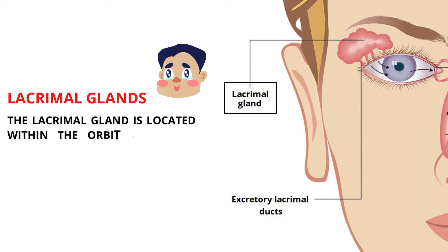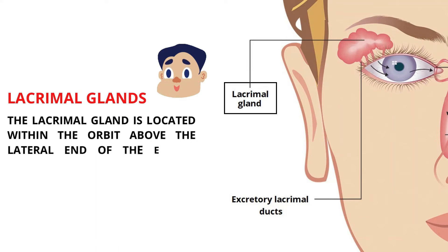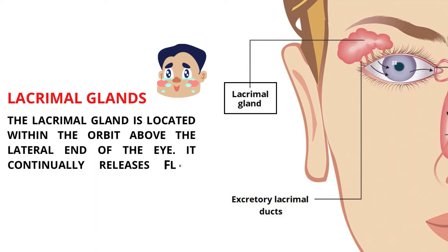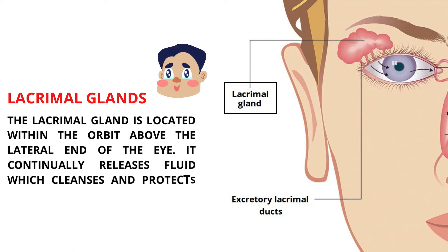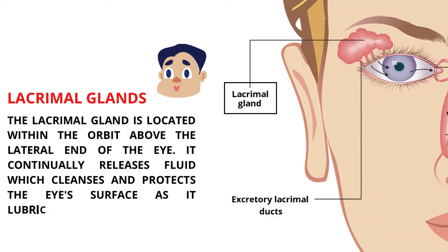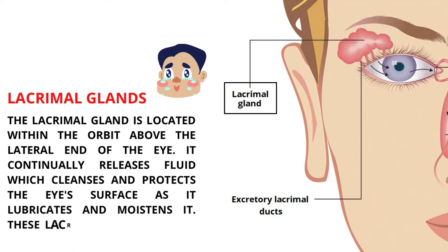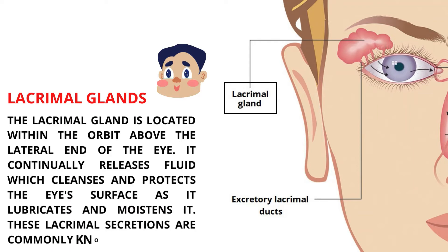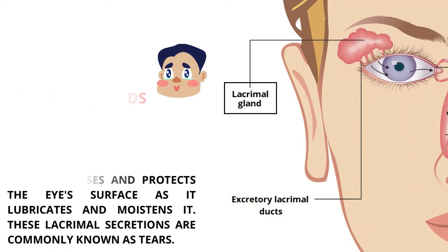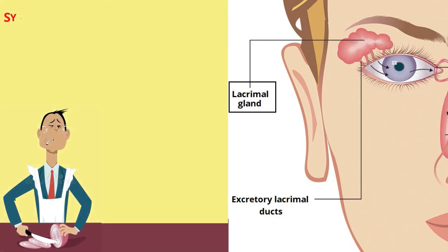The lacrimal gland is located within the orbit above the lateral end of the eye. It continually releases fluid which cleanses and protects the eye's surface as it lubricates and moistens it. These lacrimal secretions are commonly known as tears.